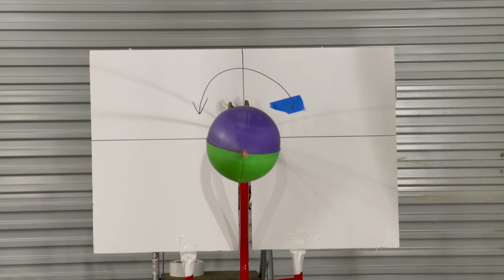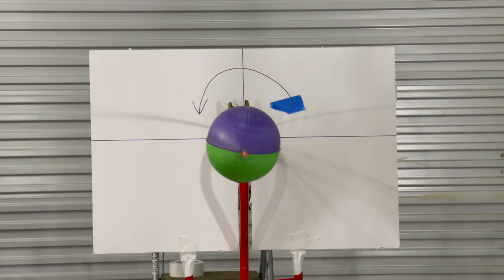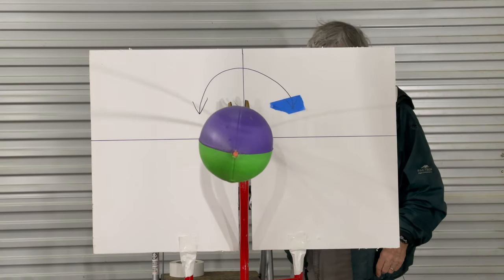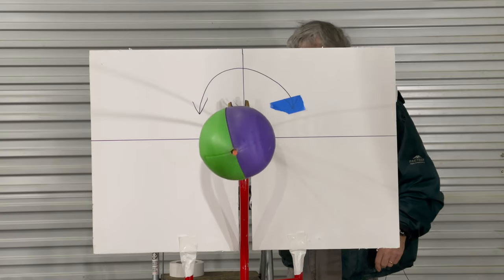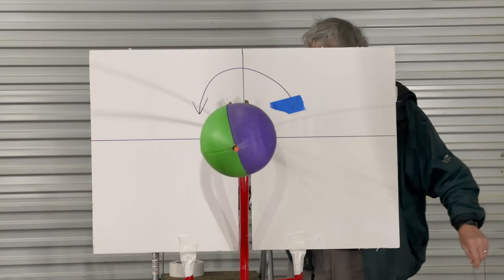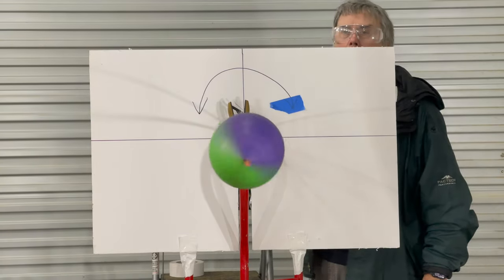Since it's turning counter-clockwise, the football should move up. And you can see that it does. It kind of bounces around, but it definitely goes up.